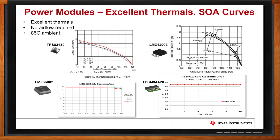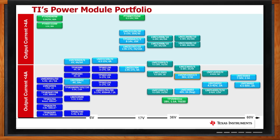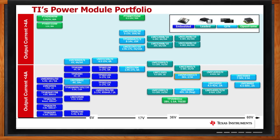Let's talk specifically about TI's power modules portfolio. This slide shows the breadth of products available, with color coding to indicate types of packages at different current levels. The dark blue embedded products are typically lower current and lower voltage devices. The QFN-style products go up to 60V and up to 30A. The leaded devices are typically higher current and higher voltage, and there are also open-frame style devices for higher voltage applications.